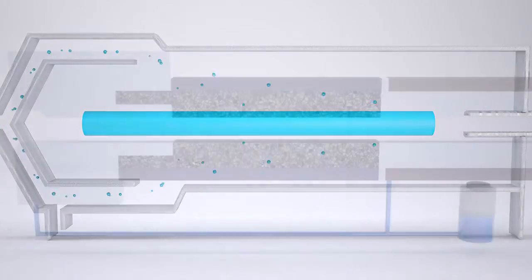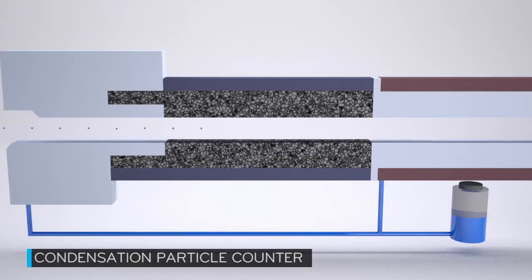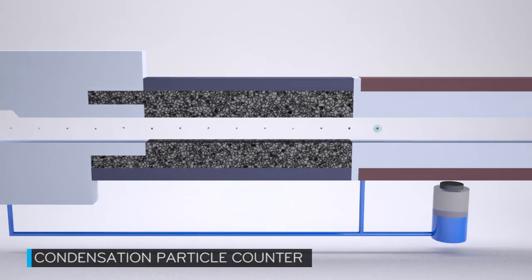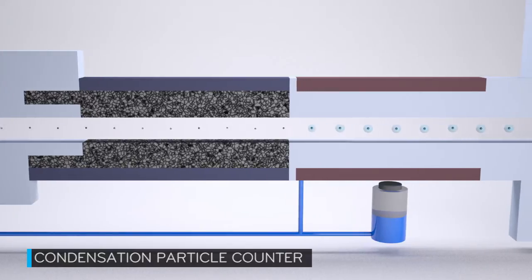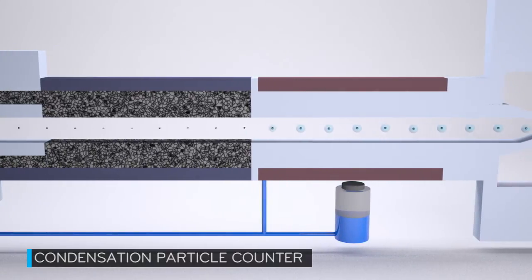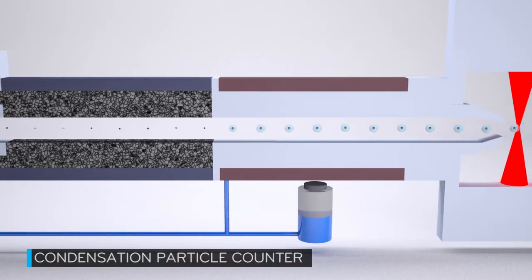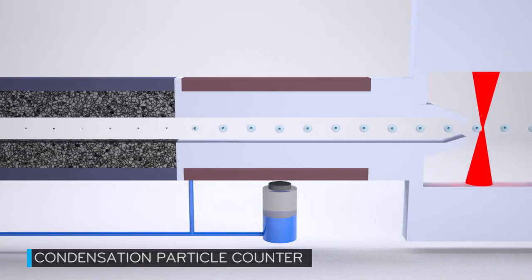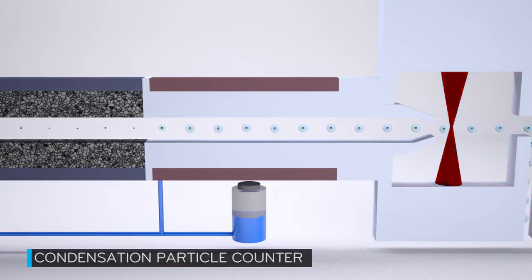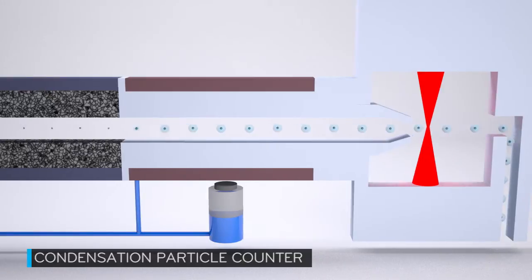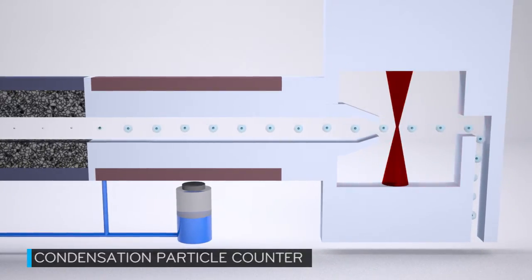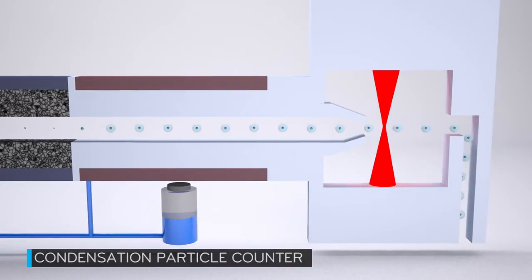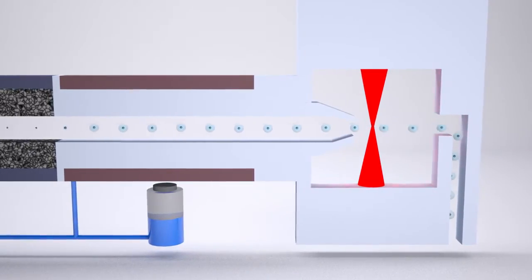The particles leaving the DMA are then counted by a condensation particle counter. Because the particles that leave the DMA are too small to be counted optically, they pass through a CPC that forces a working fluid, typically water or butanol, to condense onto the particles, creating droplets, each with a particle at its center. These droplets are large enough to scatter light when they pass through a laser beam. Each pulse of scattered light is detected and counted individually.